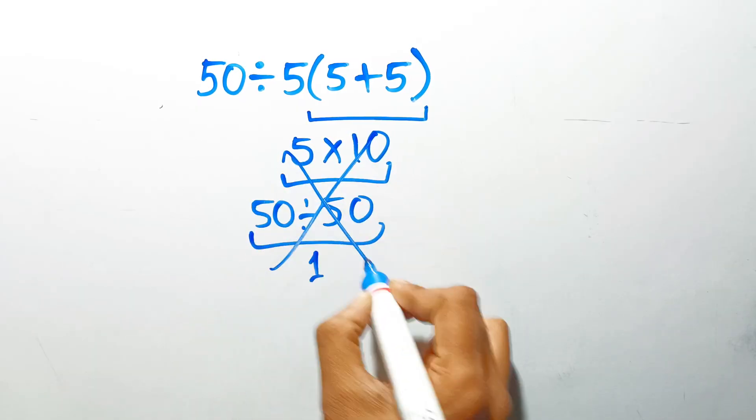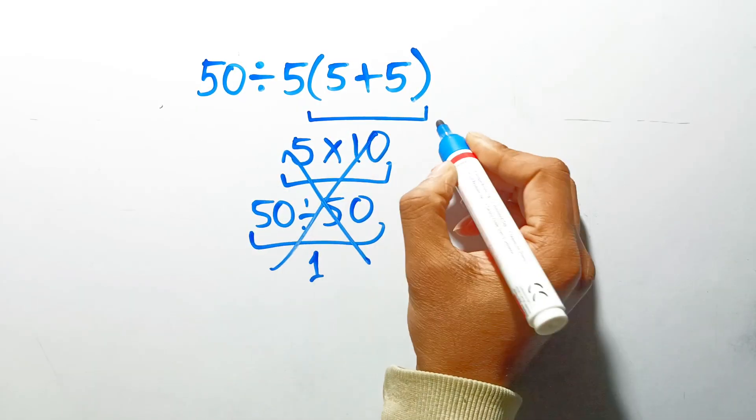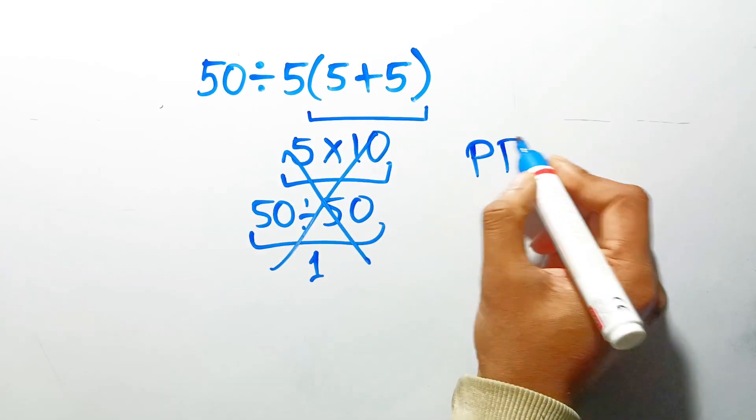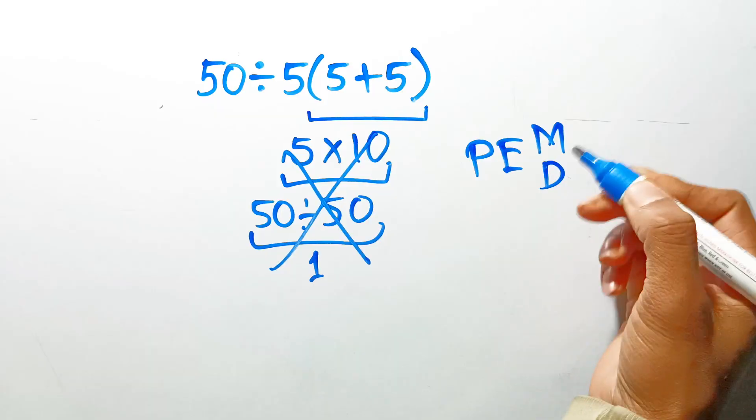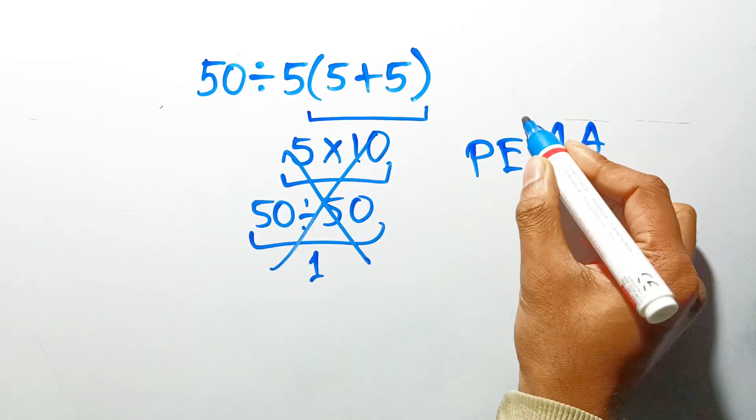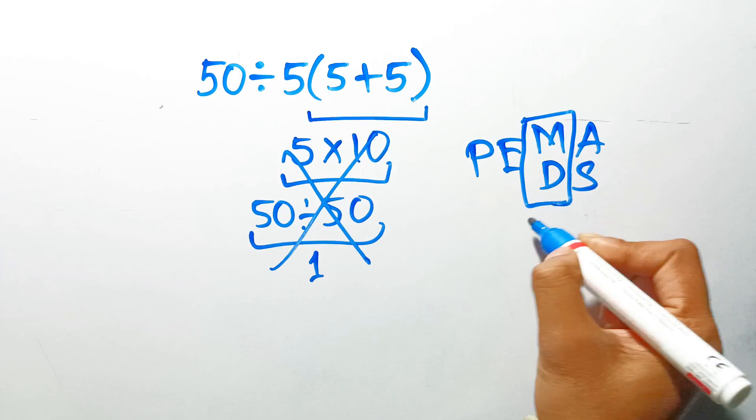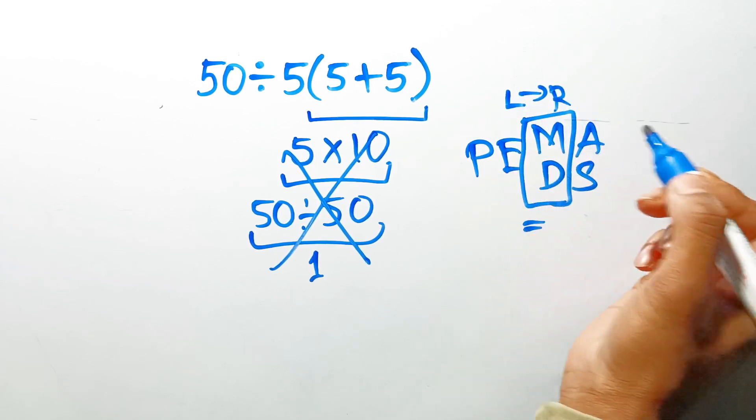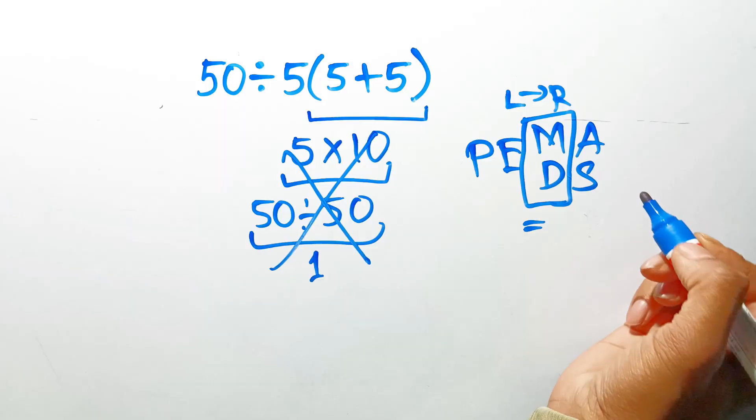But this answer is not correct, because according to the order of operations, first we have to do parentheses, then exponents, then multiplication or division, and finally addition or subtraction. Remember that multiplication and division have equal priority, and we have to work from left to right, and the same applies to addition and subtraction.